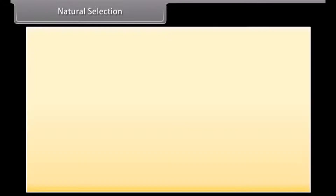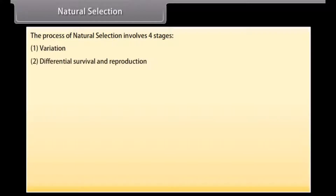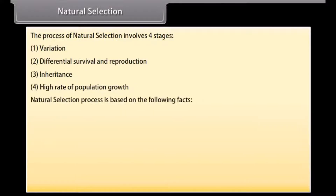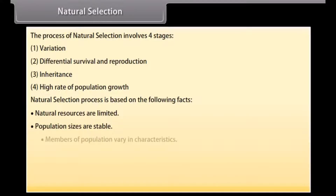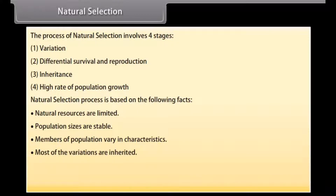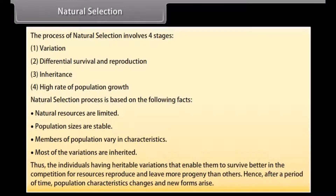Natural selection involves four stages: variation, differential survival, reproduction, and inheritance. It is based on the facts that natural resources are limited, population sizes are stable, members of a population vary in characteristics, and most variations are inherited. Individuals with heritable variations that enable better survival reproduce and leave more progeny, causing population characteristics to change and new forms to arise.